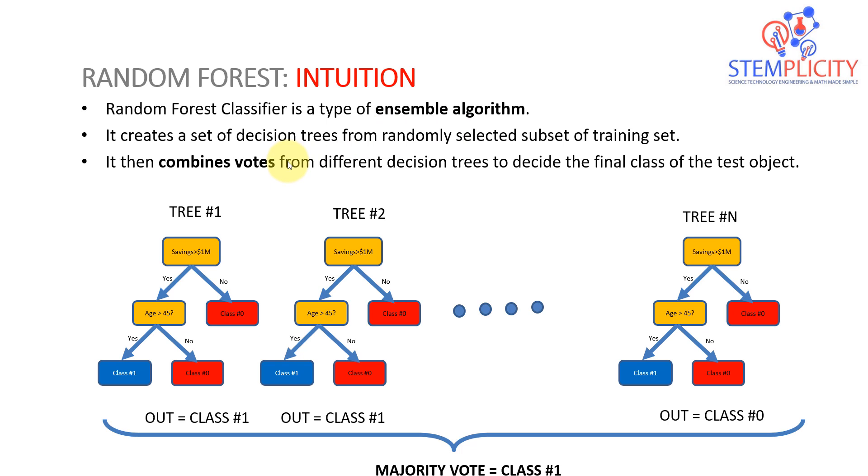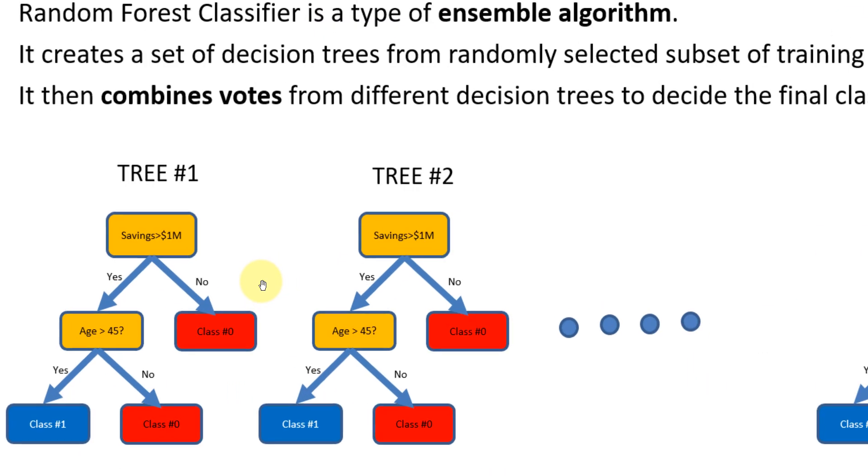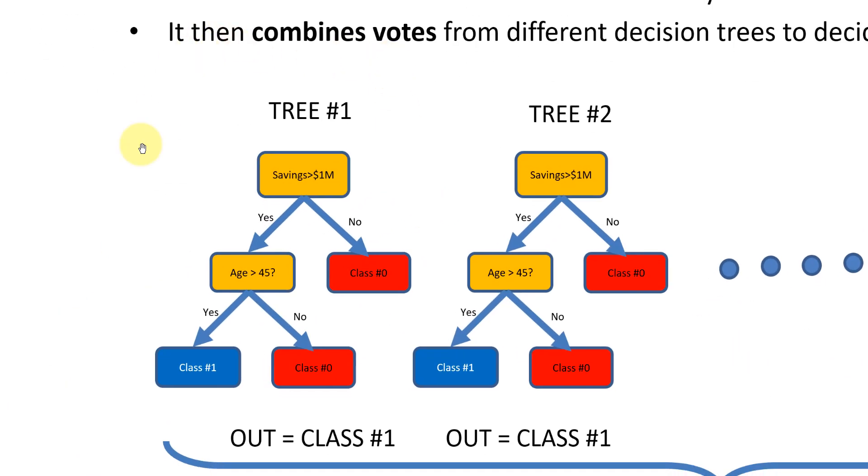So instead, in a nutshell, instead of using or relying on one decision tree, which is simply, if you guys zoom in here, you will find this is simply the exact same tree as we had before. We had savings more than 1 million, age 45, yes or no, then you come up with class either class 0 or class 1, which is are you eligible to retire or not.